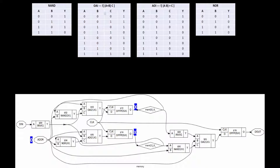For the OAI gate — OR-AND-Invert — you first OR inputs A and B, then AND the result with C, then invert the entire thing. For example, with A=1, B=0, C=0: A OR B = 1; 1 AND C = 1 AND 0 = 0; invert of 0 = 1. So the output is 1. You may want to verify this truth table by hand calculation.